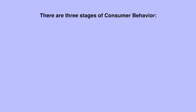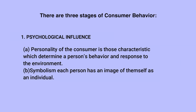There are three different stages of consumer behavior. The first is psychological influence, meaning that the personality of the consumer is those characteristics which determine a person's behavior and response to the environment. Symbolism is the image each person has of themselves as an individual.